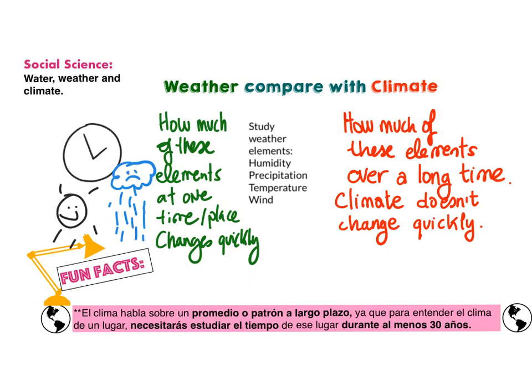But on the opposite side, when we study the climate, we study these elements that we have seen before — humidity, precipitation, temperature and wind — but over a long time.